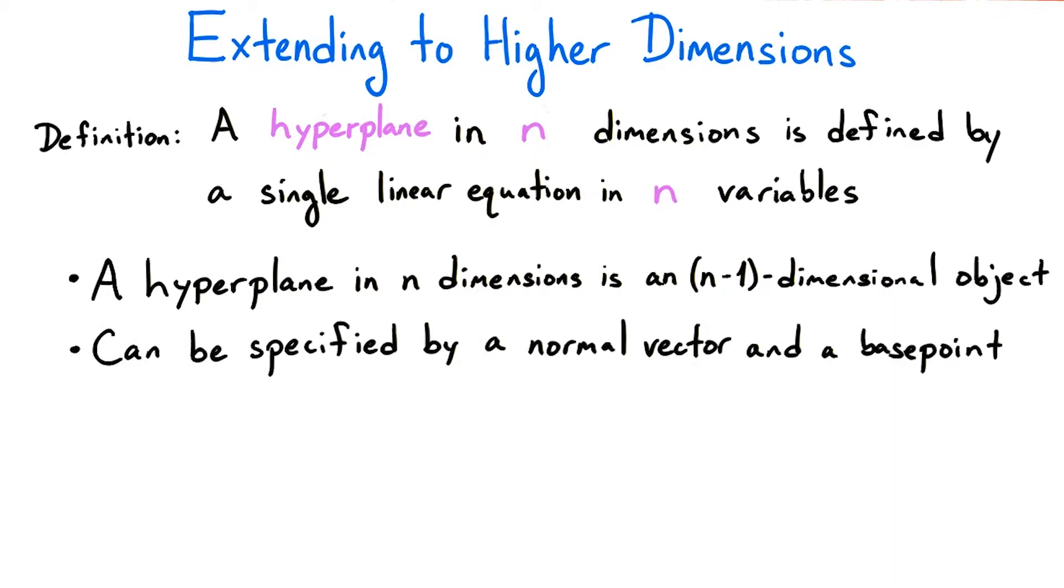It can be specified by a normal vector and a base point. Also, like lines and planes, the coefficients of the variables in the equation give a normal vector for the higher dimensional hyperplane. And we need at least n different hyperplanes in n dimensions in order to obtain a unique intersection point.